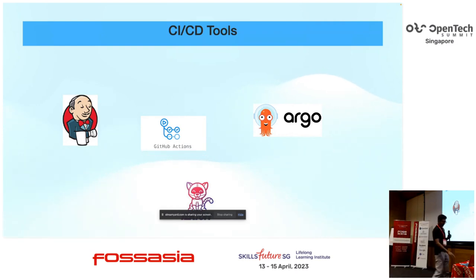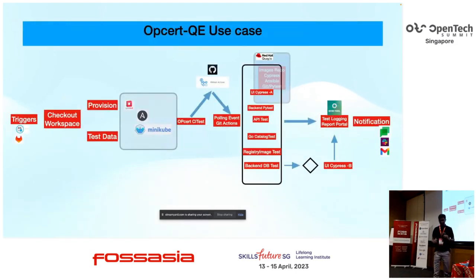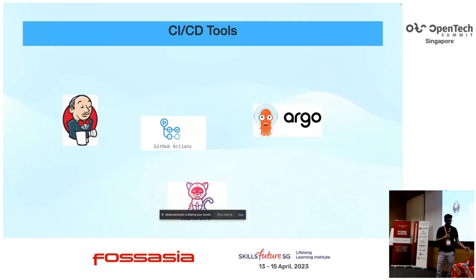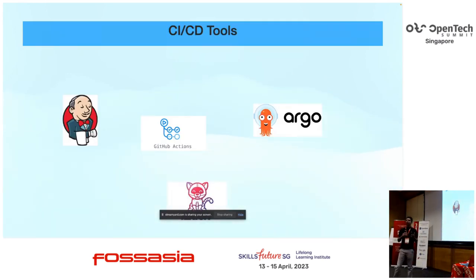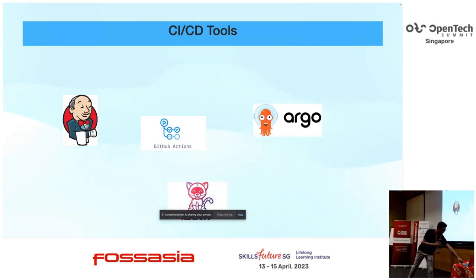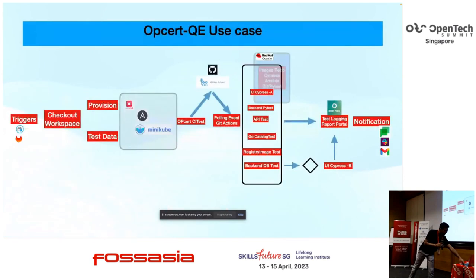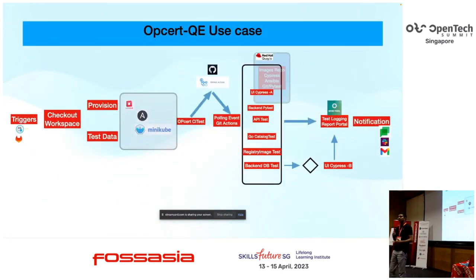Tekton is a Kubernetes resource which helps you build your pipeline using multiple tasks and stages. This is one of the use cases I was working on for my last project.